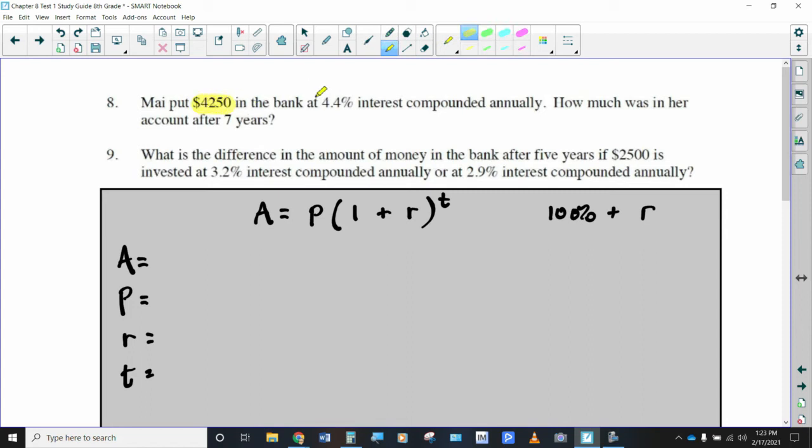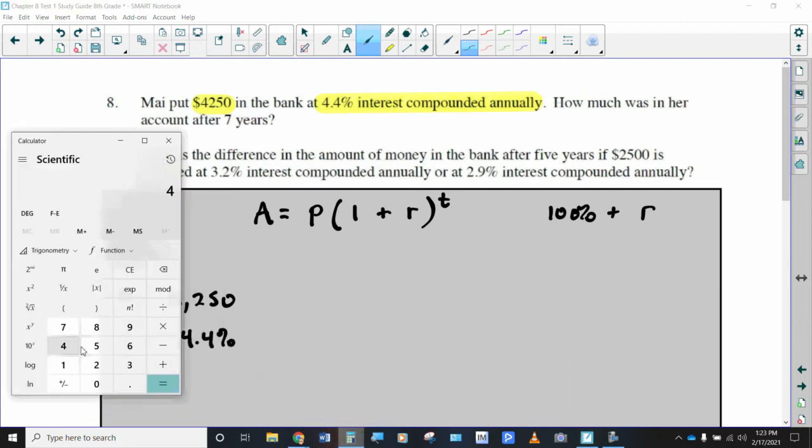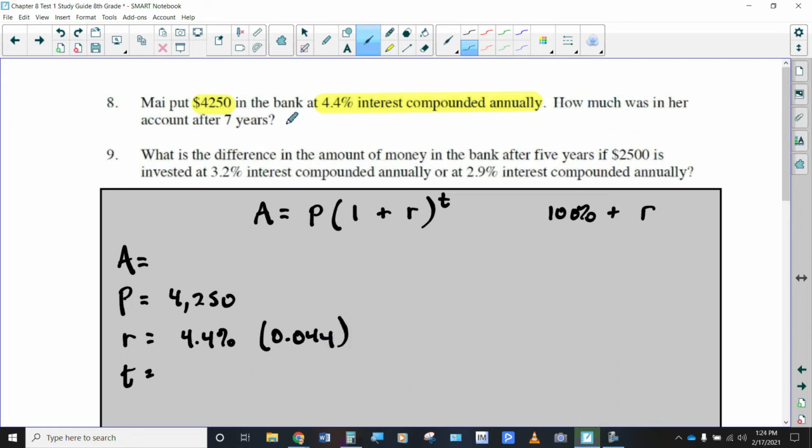So let's go ahead and define all of these variables so that we can put everything into the formula. Mai put $4,250 in the bank at 4.4% interest compounded annually, annually meaning once per year. So let's go ahead and write down what we've got so far. That's the principal. That's the amount of money being put into the bank, $4,250. The interest rate is 4.4%, which when you take that 4.4 and you divide it by 100, you get 0.044. And how much was in our account after seven years? So it's going to be compounded annually once a year for seven years means it's going to be compounded seven times.